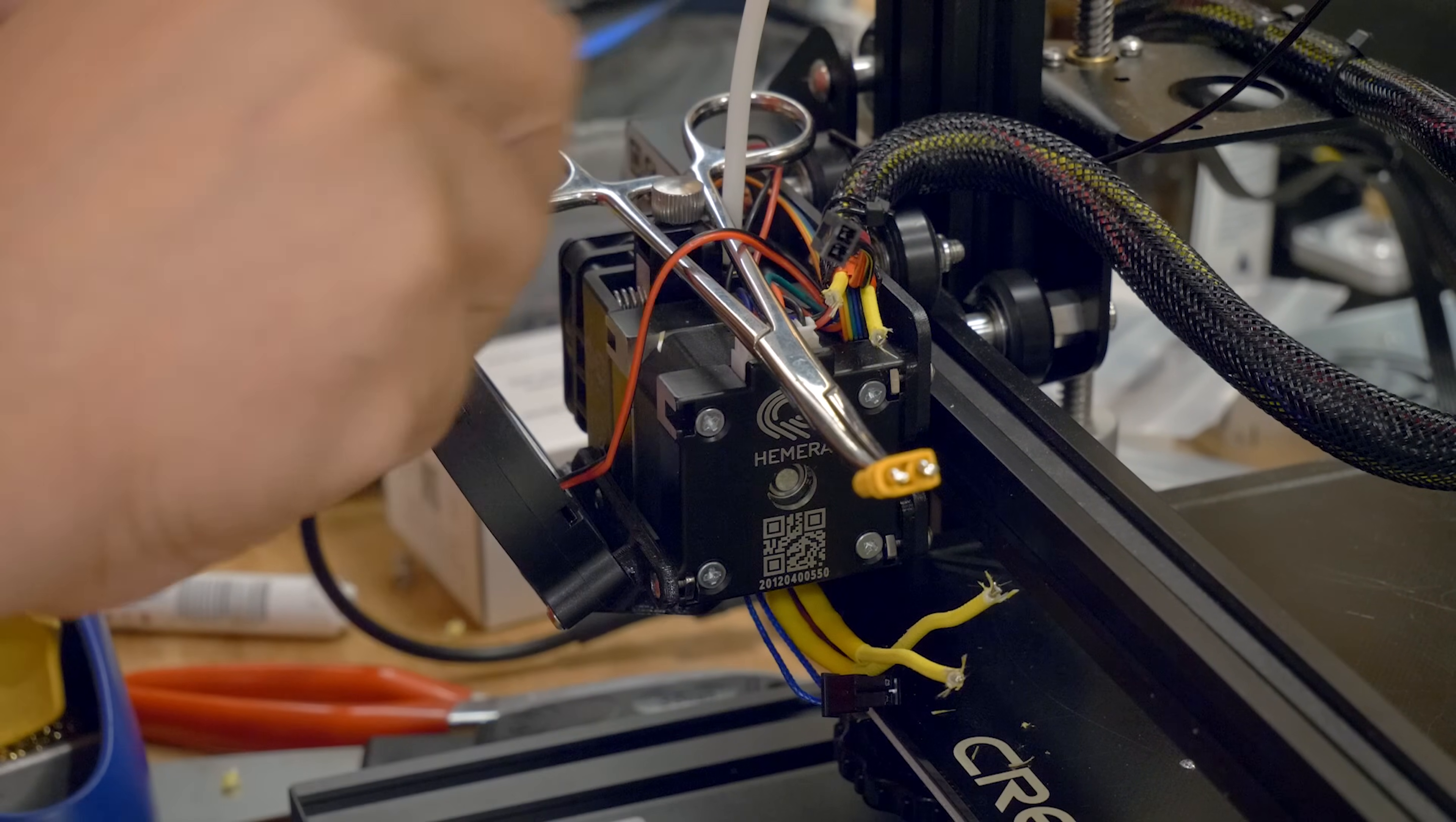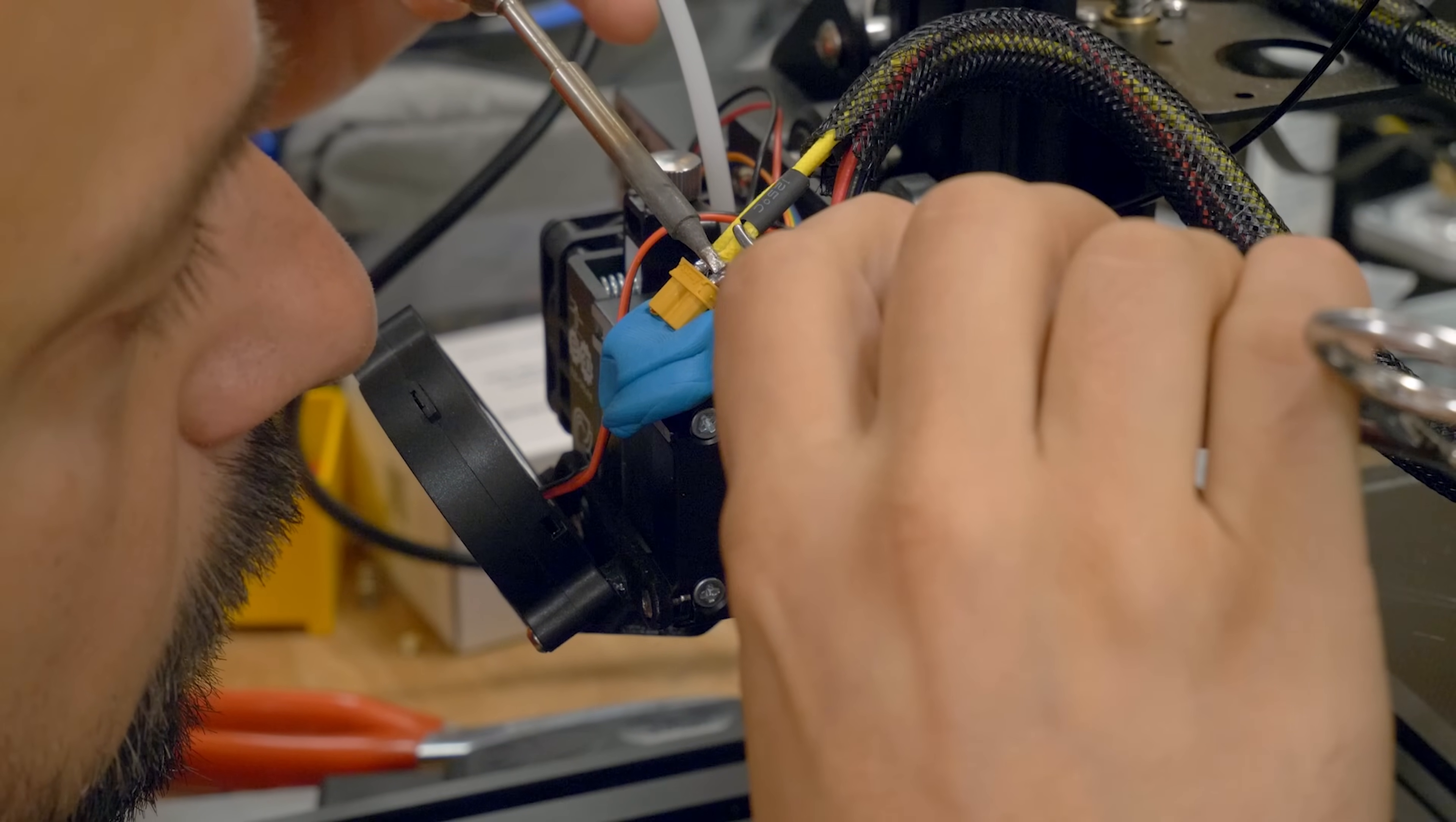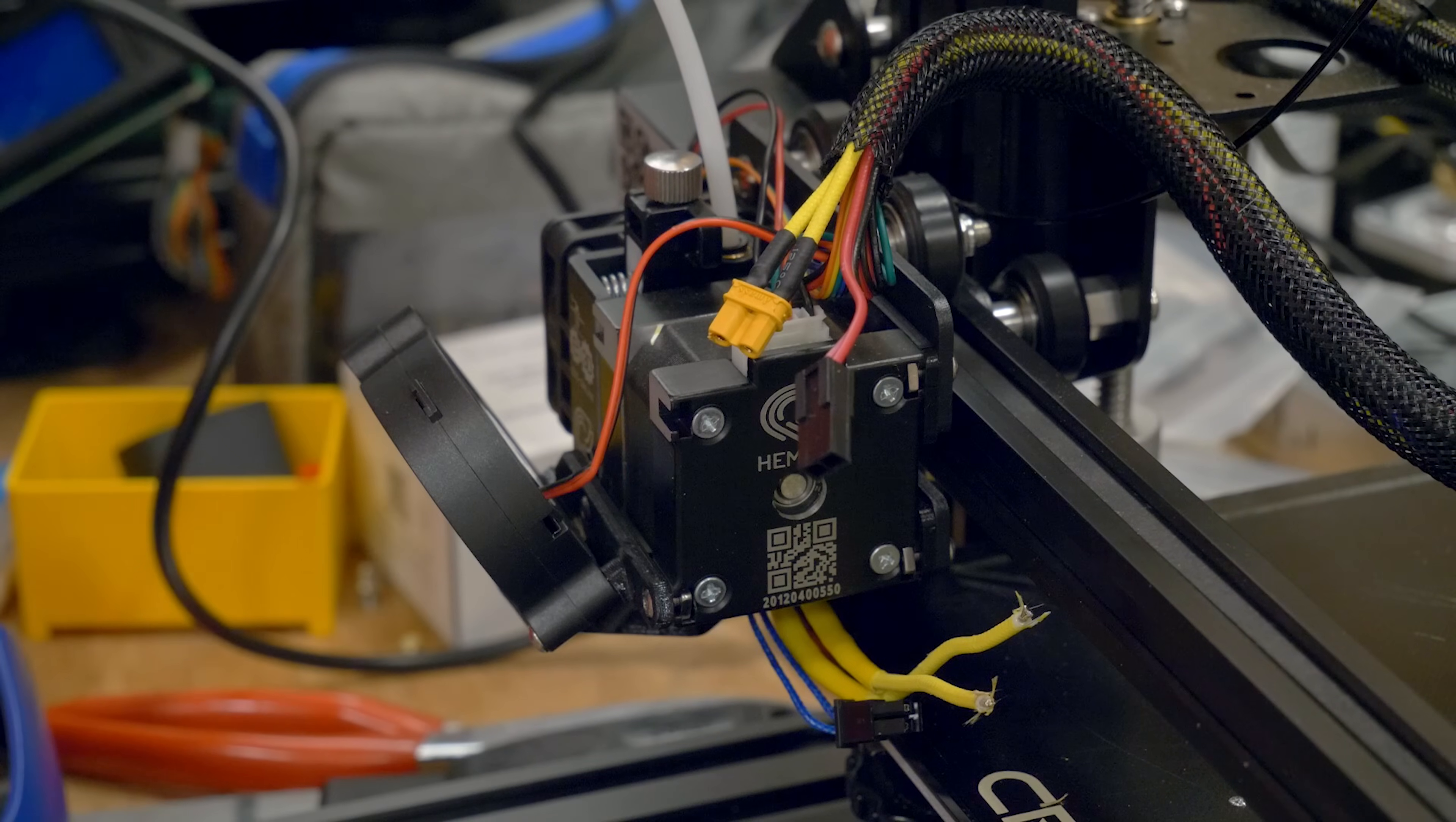And now the good news is that there is no polarity on this. There's no plus or negative, so there's no way to wire it up wrong. It's just a resistive element. So, a little flux to make sure things go smoothly.